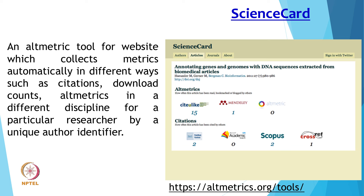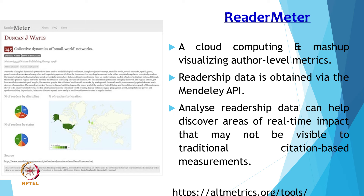Science Card is an automatic tool and website that collects metrics automatically in different ways — such as citations, download counts, and altmetrics — in different disciplines for a particular researcher by a unique author identifier. ReaderMeter is a cloud computing and massive visualization author-level metric tool based on the consumption of scientific content by a large population of readers. Readership data is obtained via the Mendeley API, and analyzing readership data can help discover areas of real-time impact that may not be visible to traditional citation-based metrics.